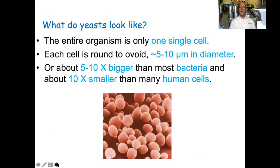What do yeast look like? They are single-celled organisms. Each cell is round to ovoid in shape, and approximately 5 to 10 micrometers in diameter — about 5 to 10 times bigger than most bacteria, and about 10 times smaller than many human cells.